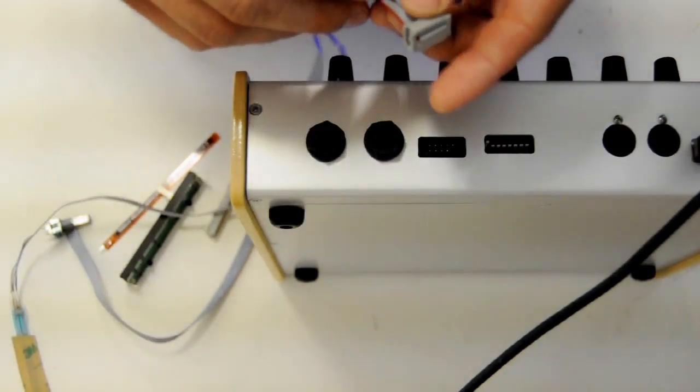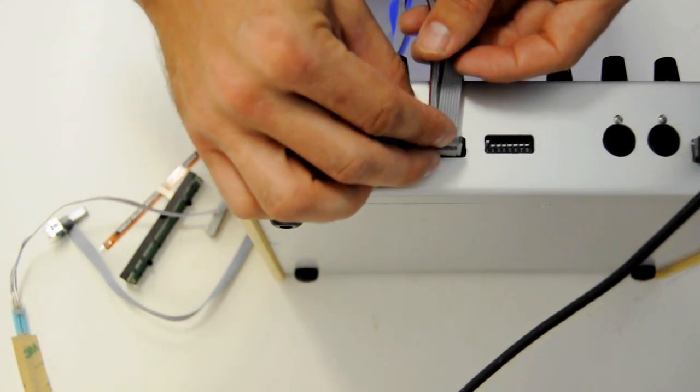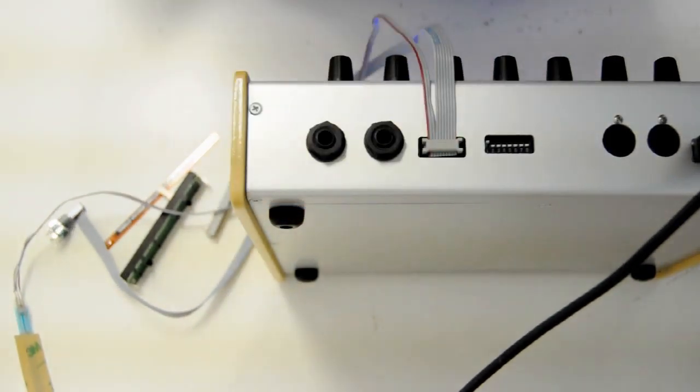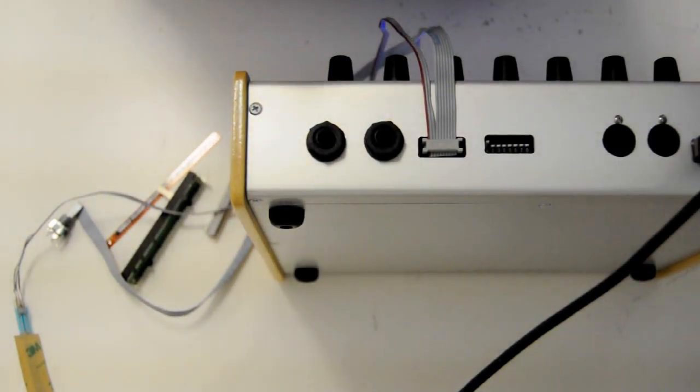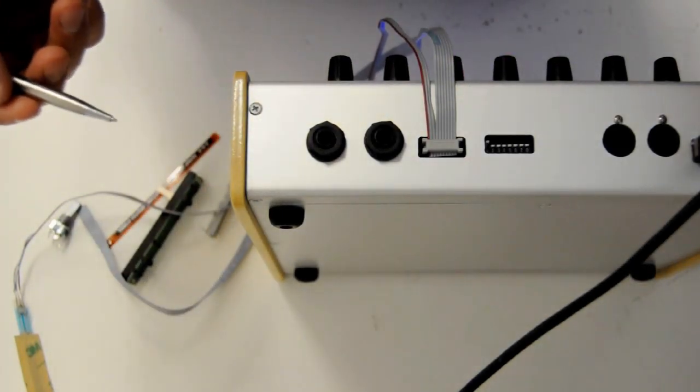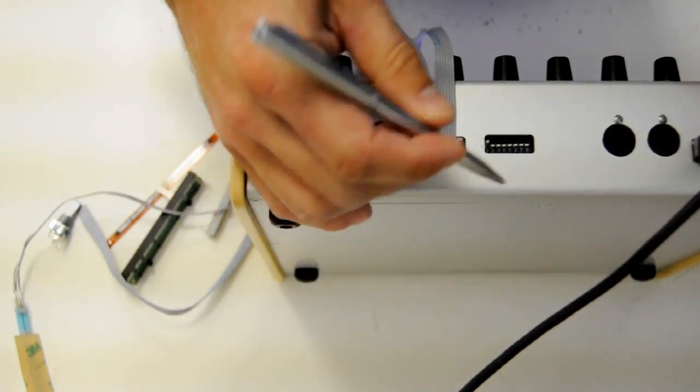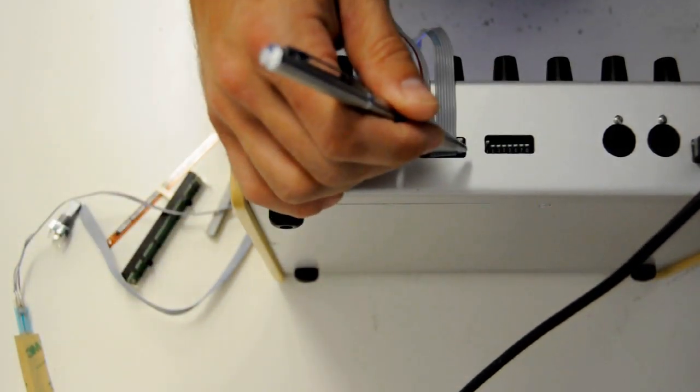So you're going to need to go ahead and plug it into your expansion jack, and then you're going to need to activate the port. If you had all 8 analogs open, you'd get feedback, MIDI feedback. So to avoid that, we put DIP switches in here.